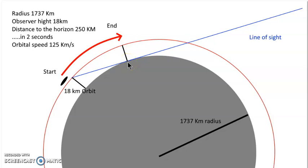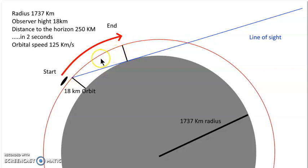The craft moves 250 kilometers in two seconds, meaning a velocity of 125 kilometers per second. That's the length of the straight-line segment, not even the arc — the arc would be slightly more. Someone might say 125 km/s is fine because they are alien and can do anything.